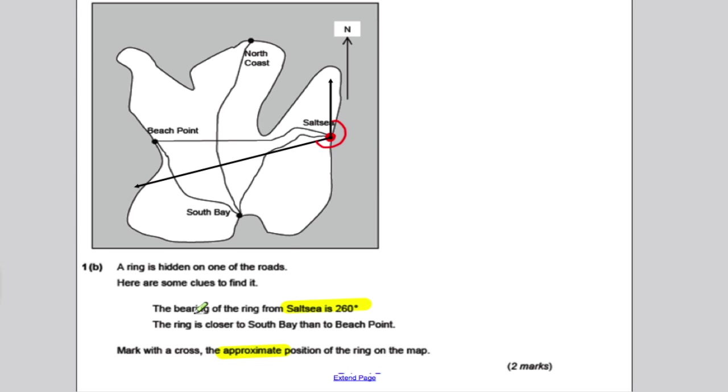So that's about 260. It also says that the ring is closer to South Bay than Beach Point. Now, the ring has to be closer to here than here. Well, anywhere along here it's closer to Beach Point. It looks like around here, maybe it's closer to South Bay. But it's got to be on one of the roads. So here, are we sure that that's closer to Beach Point than South Bay? I'm not sure we can be absolutely sure, but here we definitely can. Here it's closer to South Bay than Beach Point, and it's on a road, and it's on the bearing of 260. So I think here is where I would put the X in order to answer that question.